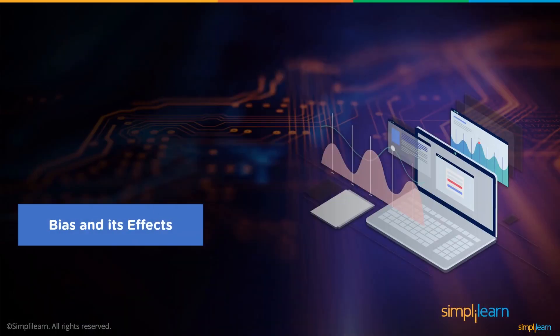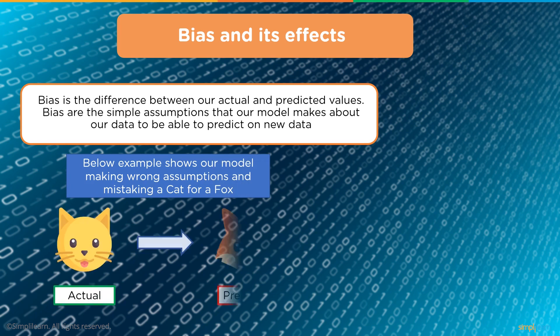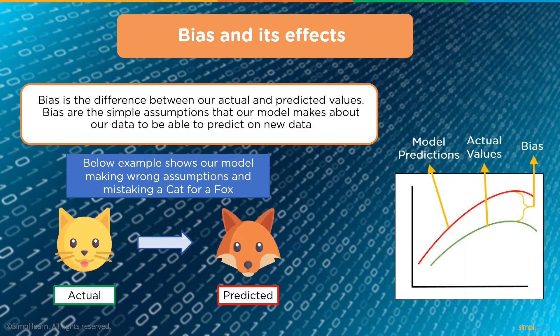Bias is the difference between our actual and predicted values — the simple assumptions our model makes about data to predict new data. For example, our model might mistake a cat for a fox because it only looks at pointy ears and doesn't notice the rest of the face. Humans can easily say that's actually a cat, and our model should be able to do that too.